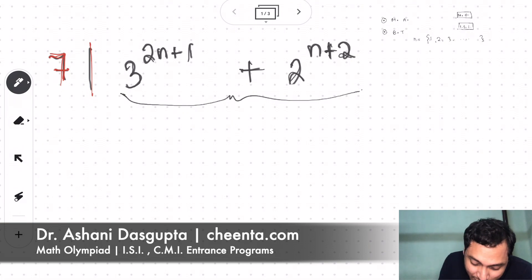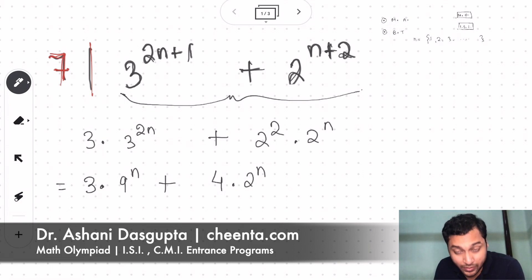So we start by simplifying this expression. This is 3 times 3 to the power 2n plus 2 squared times 2 to the power n. That implies that this is equal to 3 times 9 to the power n plus 4 times 2 to the power n.